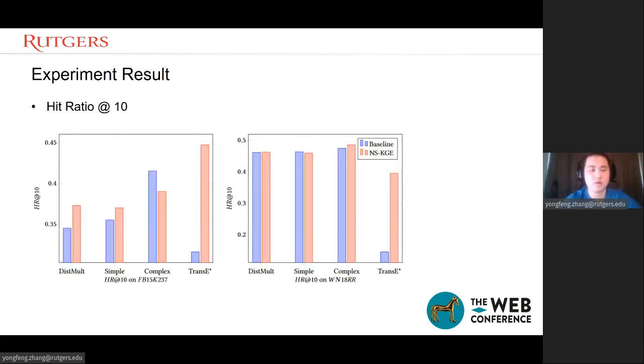Here's the first result of hit ratio at 10. You can see in the graph, in most cases, our performance is similar or better than the baseline.